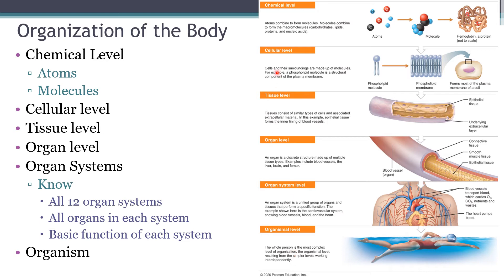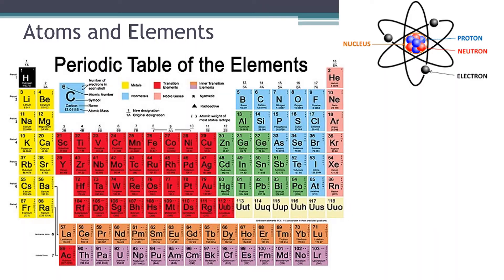Now let's talk about each of these levels, starting with the chemical level — the simplest level of organization. First are atoms. Atoms are the smallest structural unit of all things, living and non-living. You can see a basic atom here with a nucleus and an electron cloud.